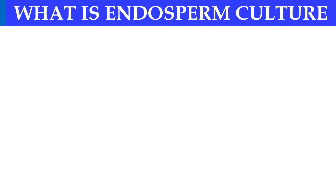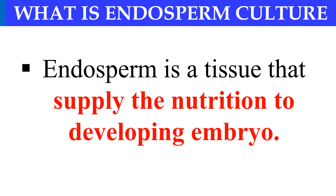First of all, what is endosperm? Endosperm is a tissue that provides nutrition to the developing embryo. It is formed in angiosperms, and during the development of the embryo, this endosperm tissue supplies nutrition to the developing embryo.